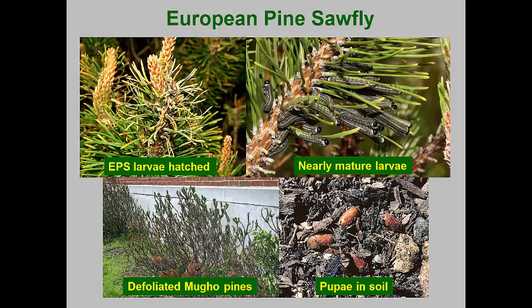The eggs hatch just as new candles begin to expand, often in mid-April. The tiny larvae feed side-by-side on nearby needles. The first-instar larvae can't eat the entire needle and they leave behind brown, hair-like center cores of the needles. This can be used as a diagnostic symptom that the sawflies have hatched and are actively feeding.